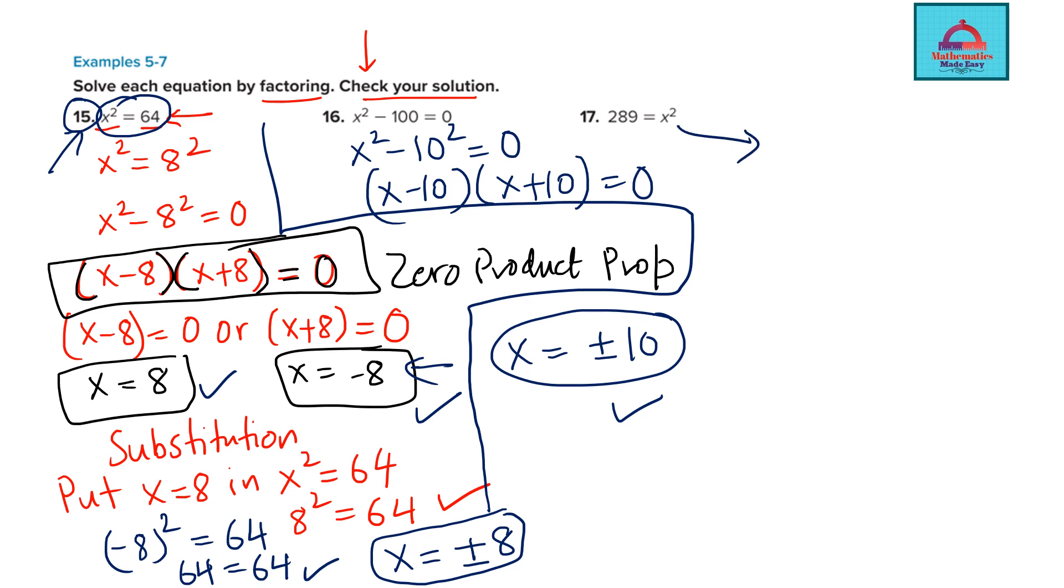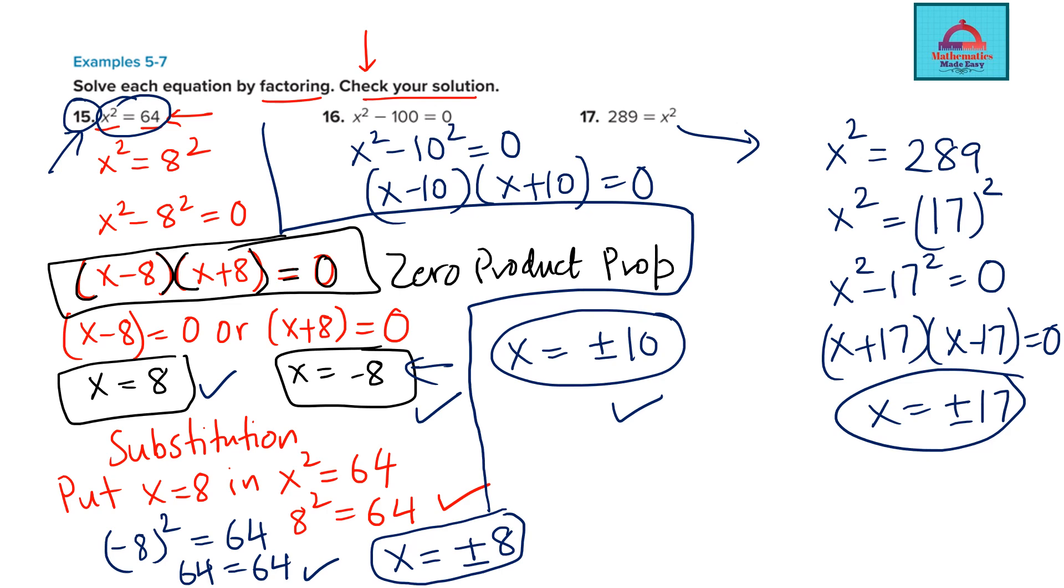Let's do question 17. This is also a square equation. x² = 289. Think, 289 is a perfect square of which number? Yes, 17. So x² - 17² = 0. Using a plus b, a minus b property, the value of x would be ±17. These are the two roots you can check by substitution.